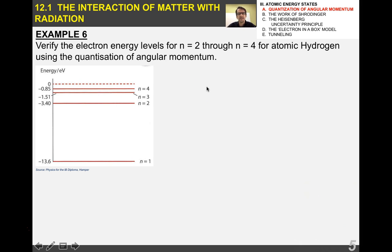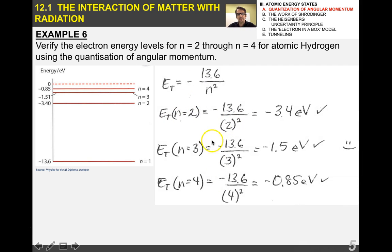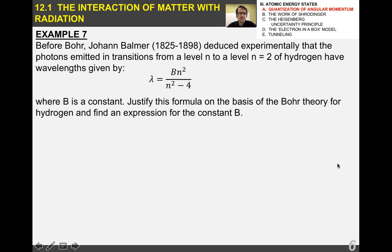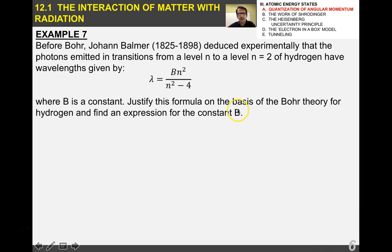As an example, it's useful to verify the electron energy levels for N equals 2 through 4 for hydrogen — go ahead and pause the video and do that. It's very simple: N equals 2 gives 13.6 divided by 4, N equals 3 divided by 9, and N equals 4 divided by 16. Now, here's a more difficult example. Before Niels Bohr, Johan Balmer deduced experimentally that photons emitted in transitions from any level to level N equals 2 have wavelengths given by a specific equation, where B is a constant. The task is to justify this formula and find an expression for the constant B — pause the video and try this before seeing my solution.